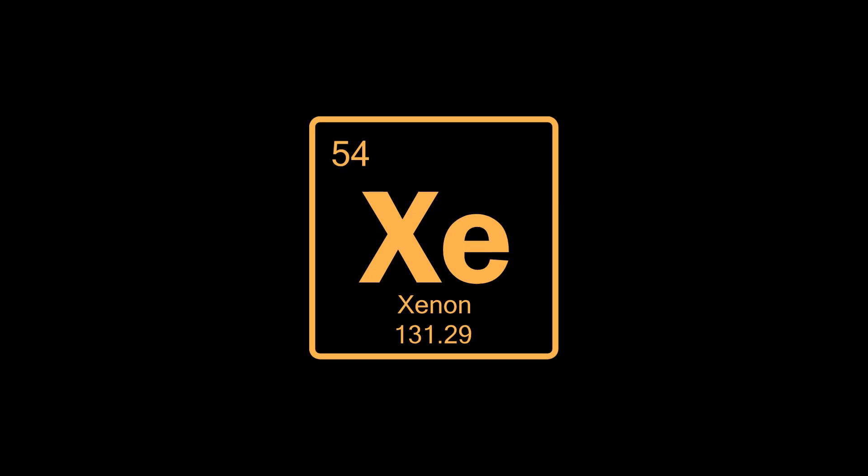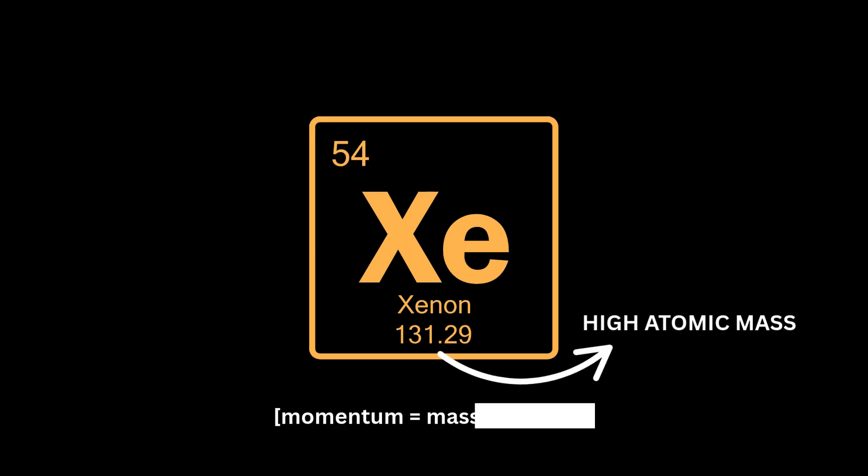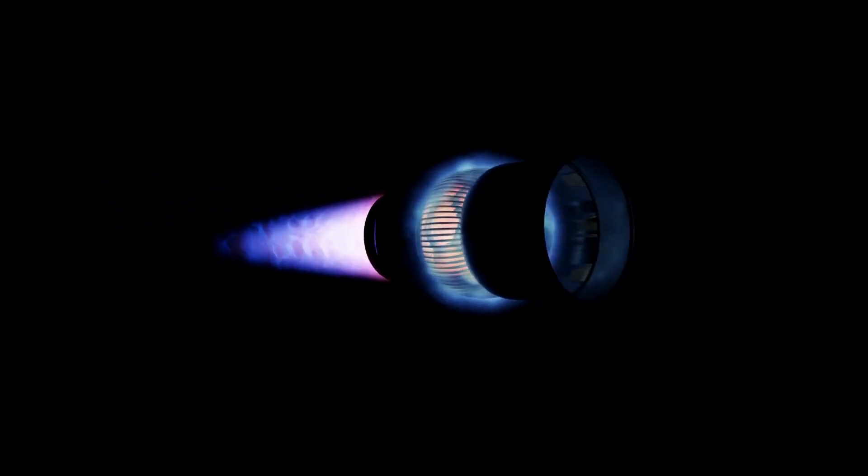The most common gas used for propellant is xenon. That's because it is a noble gas, so it can avoid unwanted chemical reactions. More importantly, xenon has a high atomic mass, which means each atom carries more momentum at a given velocity, producing greater thrust. Additionally, xenon requires relatively low energy to ionize, which makes the system more efficient.